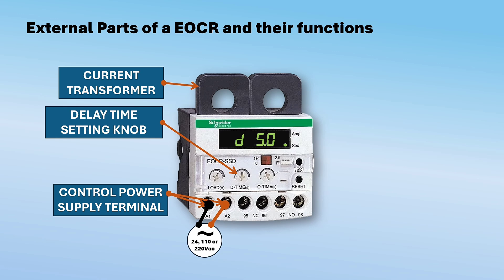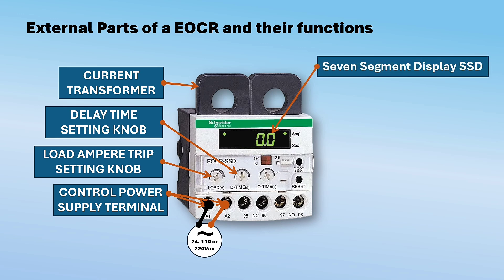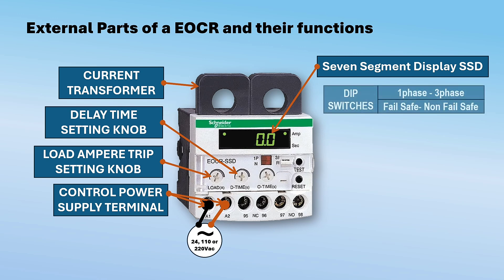The delay time allows current to return to a normal operating level before the EOCR trips. Ampere trip or load trip setting is used to set the ampere trip value of the motor as per the nameplate FLA. LED display — the display provides trip indication and ammeter functions; the cause of the trip is displayed and stays until reset is done to ensure easy troubleshooting. Dip switch — for single-phase and three-phase motor selection, and for fail-safe and non-fail-safe mode, which selects the tripping relay output.